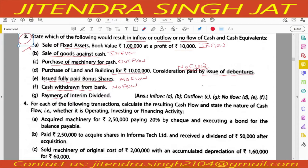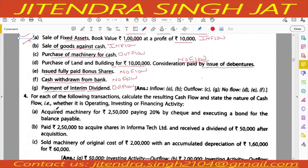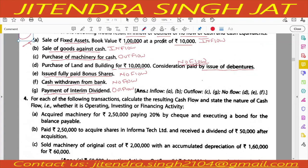Payment of interim dividend — we have paid money for the dividend, so it is outflow. This is what we need to identify — inflow means plus and outflow means minus when writing the cash flow statement. Let's also understand what interim dividend is: it is dividend declared before 31st March.